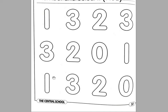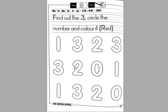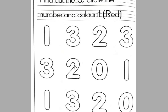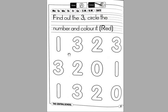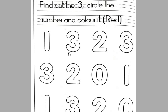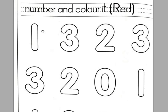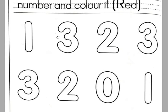इनको उन्होंने बार बार repeat किया है। आपने क्या करना है — number 3 को find out करना है, यानि कि देखना है कि जहाँ जहाँ number 3 है उसको circle करना है। Circle करने के बाद number 3 में red color करना है। तो अभी हम पहले number 3 को circle करते हैं। First line में देखें — 1 के बाद number 3 है, इसको circle करें।